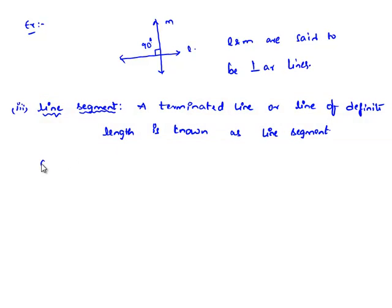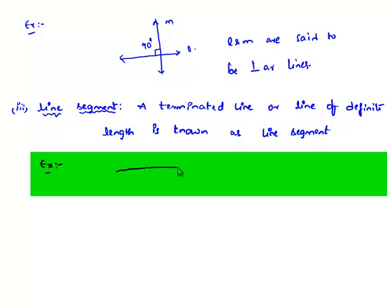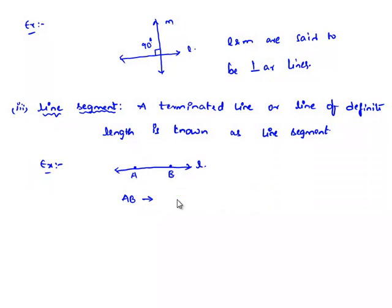Let us consider an example: let L be a line with two terminated points A and B in the middle, of definite length. Then AB is known as a line segment.